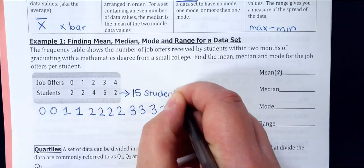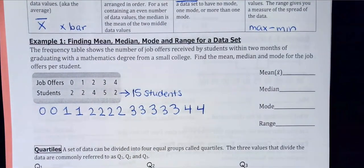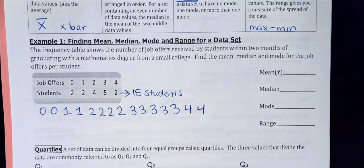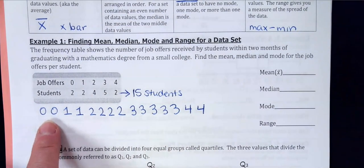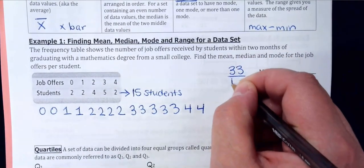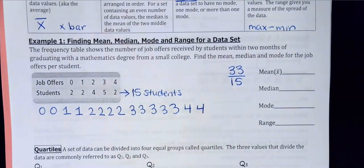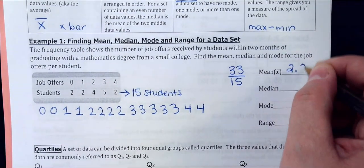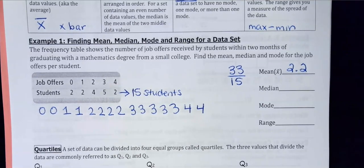That's why I said it must be a small school — 15 students. To find the mean, add all the data values up. If you add them all up you get 33, then divide by 15 students. The mean is 2.2, so on average students get 2.2 job offers per student when they come out. Now, how would I find the median?